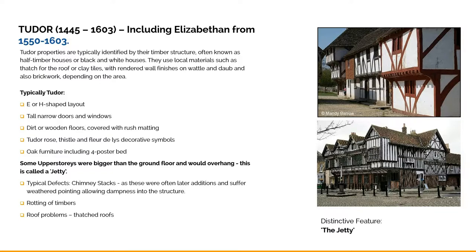So here we are in the Tudor era. These buildings often had thatched roofs, sometimes clay tiles, with rendered wall finishes on wattle and daub, and exposed brickwork depending upon the age. One key feature for identifying Tudor properties is the jetty — the overhang of the first floor above the ground floor. It's also worth looking up what a dragon beam is on a Tudor building. Exposed timber beams were also a key feature of Tudor buildings, alongside tall, narrow windows and doors.